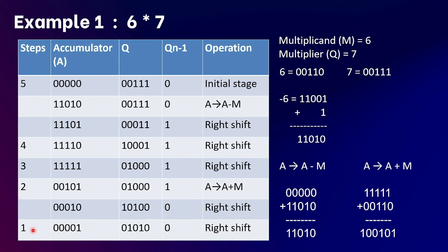In the final step the case is 0,0, so according to the flowchart we only perform an arithmetic right shift. The five steps are complete and we get our final answer. The result in decimal is 42, which is correct since 6 times 7 equals 42.